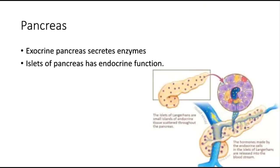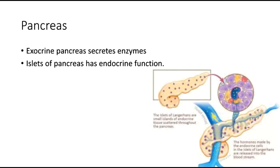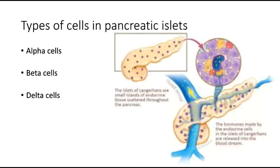The pancreas. The exocrine pancreas secretes enzymes for digestion. Specialized cells called the islets of Langerhans, or pancreatic islets, are scattered throughout the pancreas like islands and they produce hormones. There are three types of cells in the islets of the pancreas: alpha, beta, and delta cells.